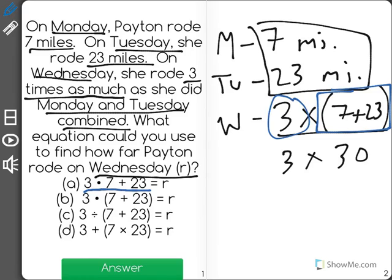A shows 3 times 7 plus 23, but here we would be solving 3 times 7 first, making it incorrect. B represents our correct answer.